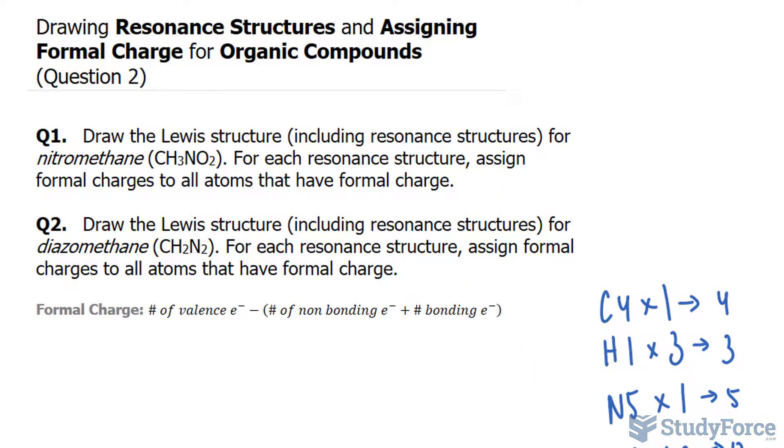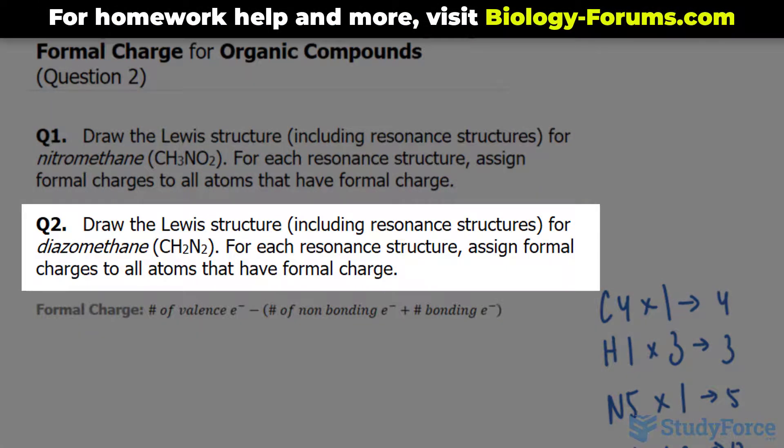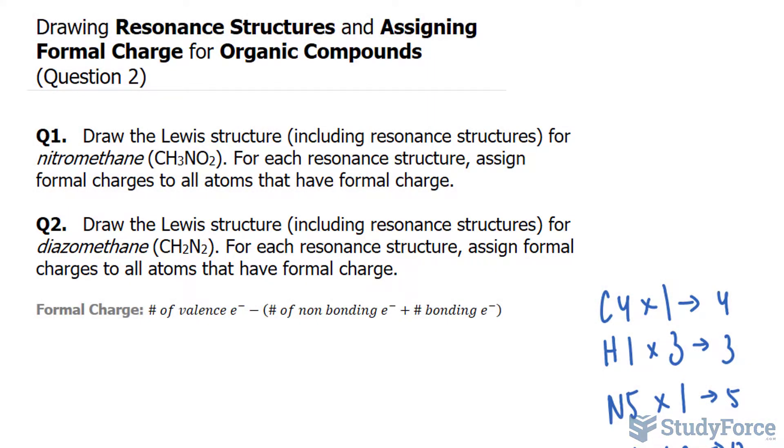In part 2 of this lesson where we draw resonant structures and assign formal charges for organic compounds, we ended with question 2. Draw the Lewis structure, including resonant structures, for diazomethane, which has the chemical formula CH2N2. For each resonant structure, assign formal charges to all atoms that have formal charges.